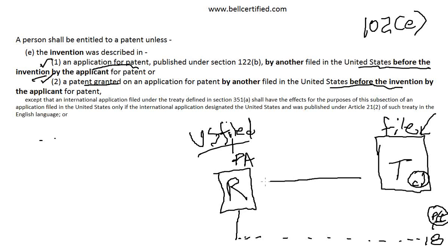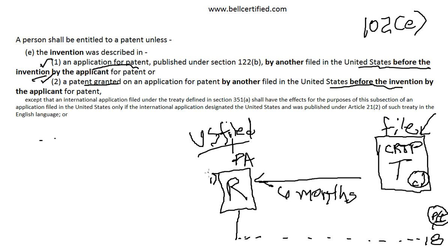You find a reference filed six months before the presumed constructive reduction to practice date. In the first example — 102E(1) — this is an application that was later published. It was by another, filed in the U.S. before the invention date by the applicant. We don't know the exact invention date, but we presume it to be the filing date of the target. So the reference is six months before that, and it teaches each and every element of Claim 1.